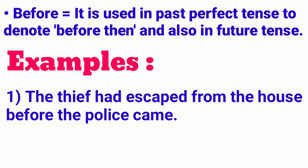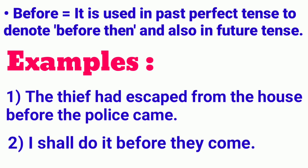That means before then — before the time was. For the second example: I shall do it before they come. As you can see, this is a simple future tense. So you can use before in simple future tense like this — I shall do it before they come. So you can use the preposition before in past perfect tense and also in future tense.